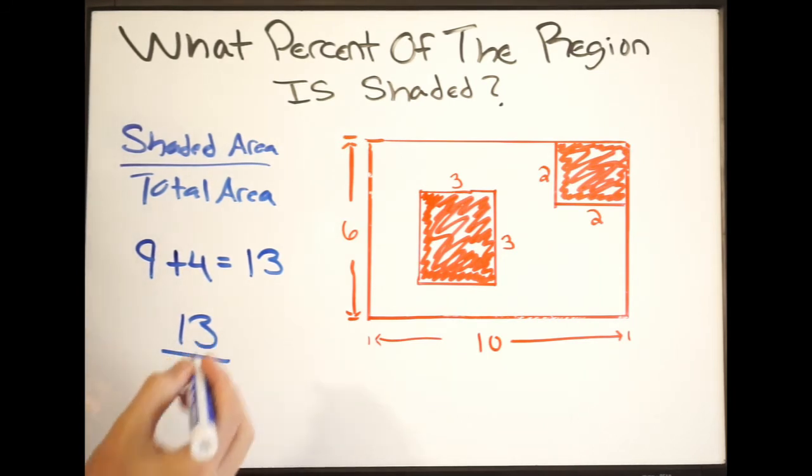Okay. So now we're all set up to find what percent of the region is shaded. So we're going to go ahead and plug this into our calculator and determine that percent. So plugging this in, we're going to get 13 divided by 60.